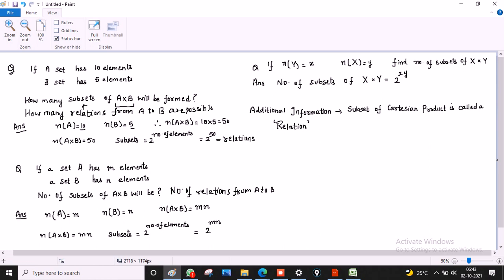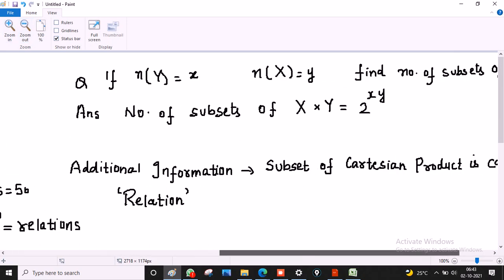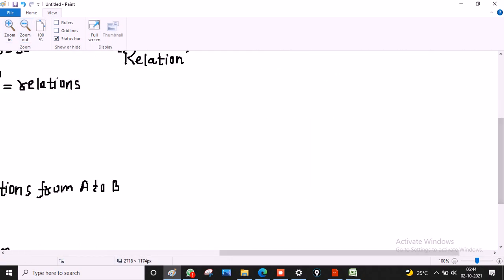Let me reframe the question for you. If a set A has 5 elements, set B has 200 elements, then find number of relations from B to A.